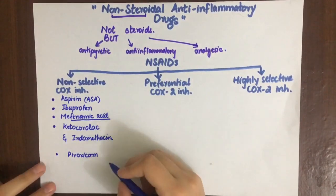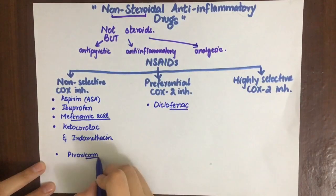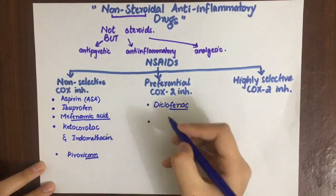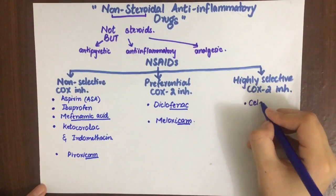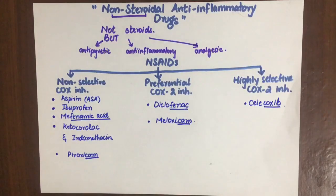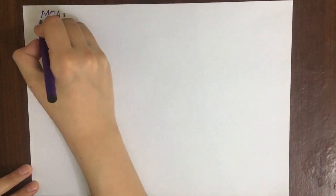All of those are non-selective Cox inhibitors, meaning they inhibit both Cox-1 and Cox-2. Preferential Cox-2 inhibitors include diclofenac and meloxicam. The highly selective Cox-2 inhibitors are the coxib group, such as celecoxib. Notably, acetaminophen (paracetamol) is not classified as an NSAID because it lacks anti-inflammatory properties.